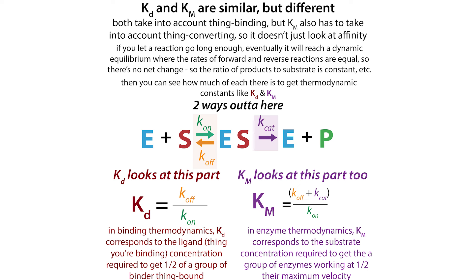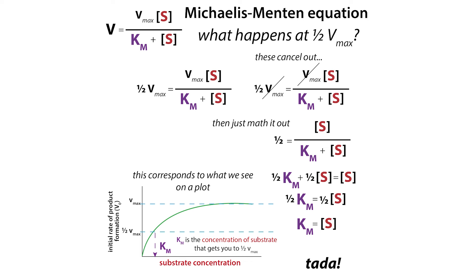Km is similar to but not the same as Kd, the dissociation constant. With Kd, we talk about things binding and unbinding. With Km, we have to think about things binding and unbinding, and also things binding and then being turned into product. The Km works out mathematically to be equal to the concentration of substrate at which you have your half-maximal velocity.